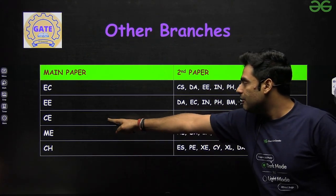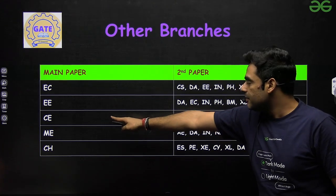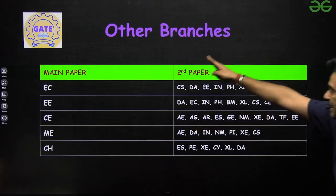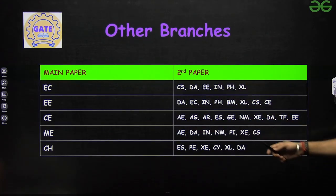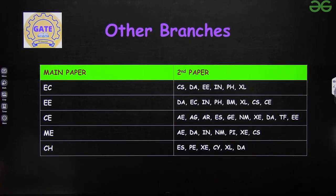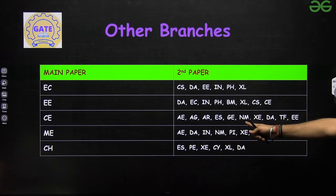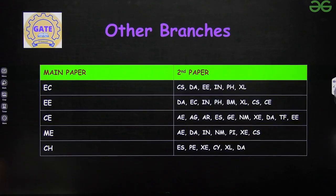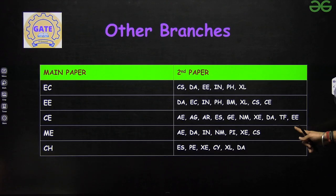With Civil Engineering as the main paper, you can select as the second paper: Aeronautical, Agriculture, Architectural, ES (Environmental Science), GE (Geology and Geophysics), NM (Naval and Marine Engineering), XE (Engineering Sciences), DA, TF (Textile), and EE (Electrical).